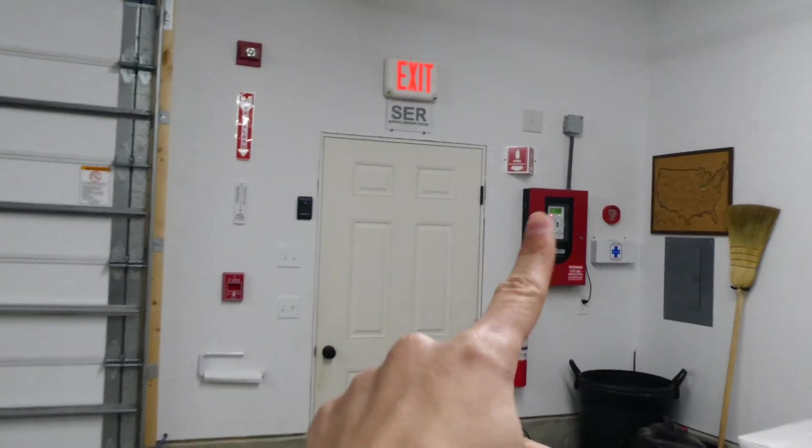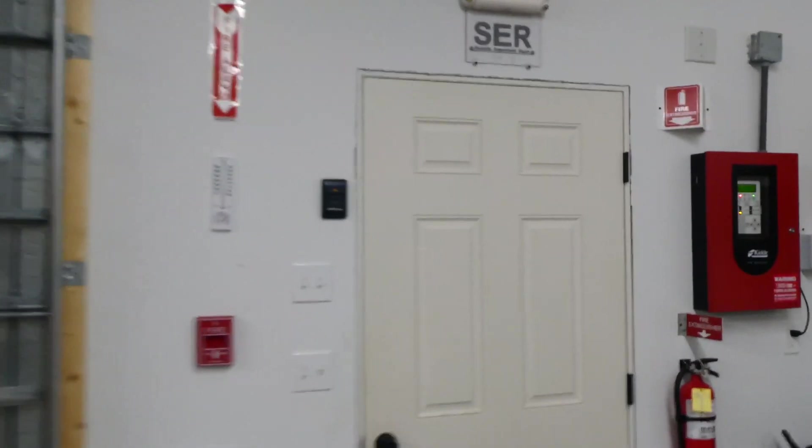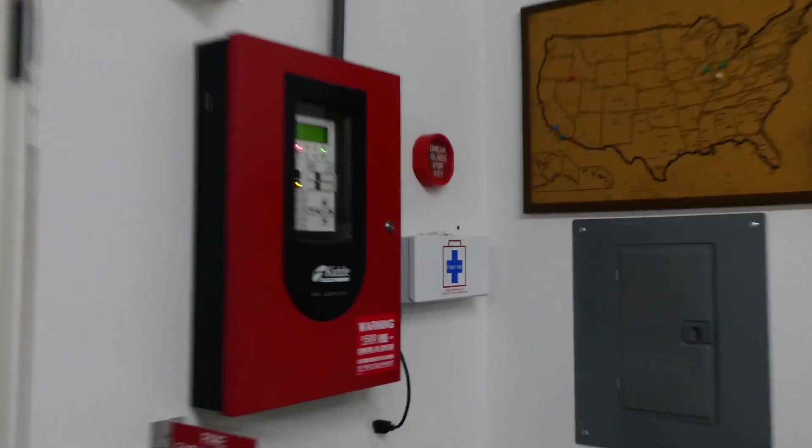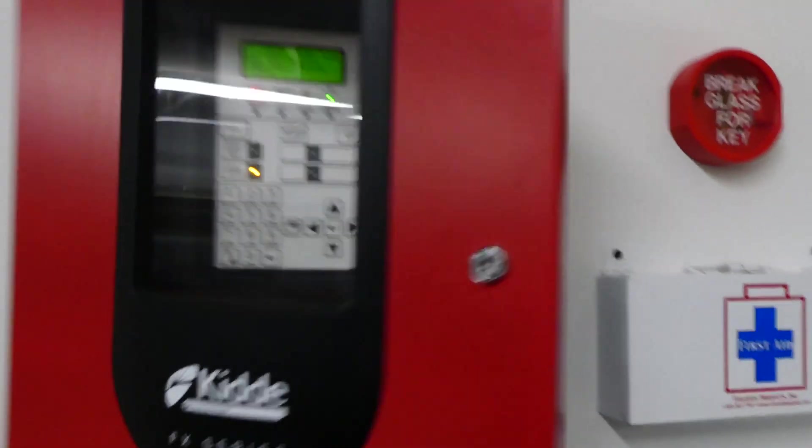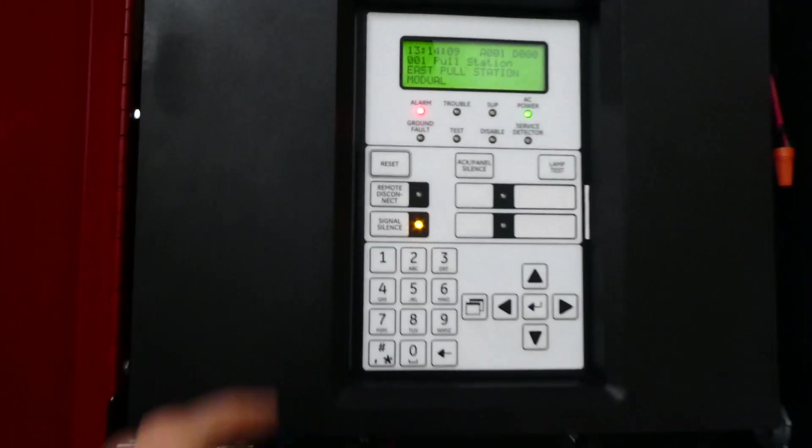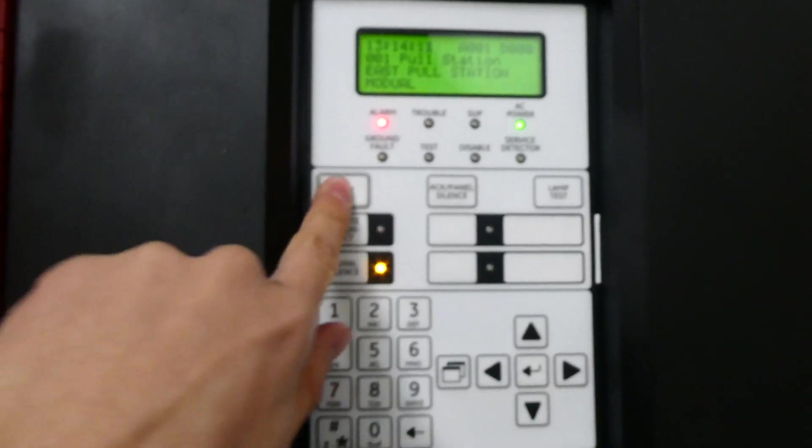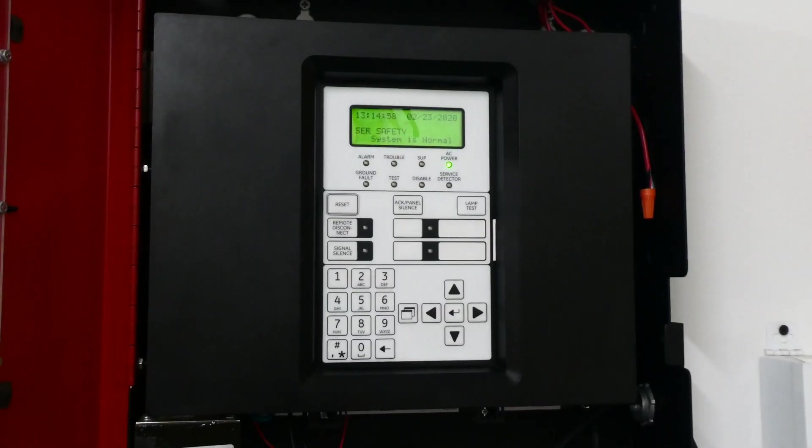Okay, the key has been replaced, the pull station has been reset. Seems like everything is back to normal, so we can go ahead and reset the entire fire alarm system just by pushing the reset button. Now that the system is reset, I can go ahead and show you this other feature the panel has called Lamp Tests.